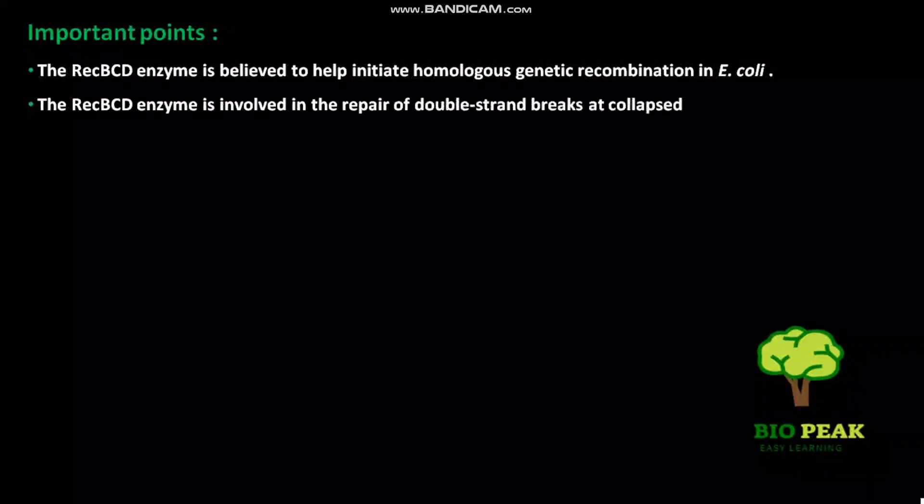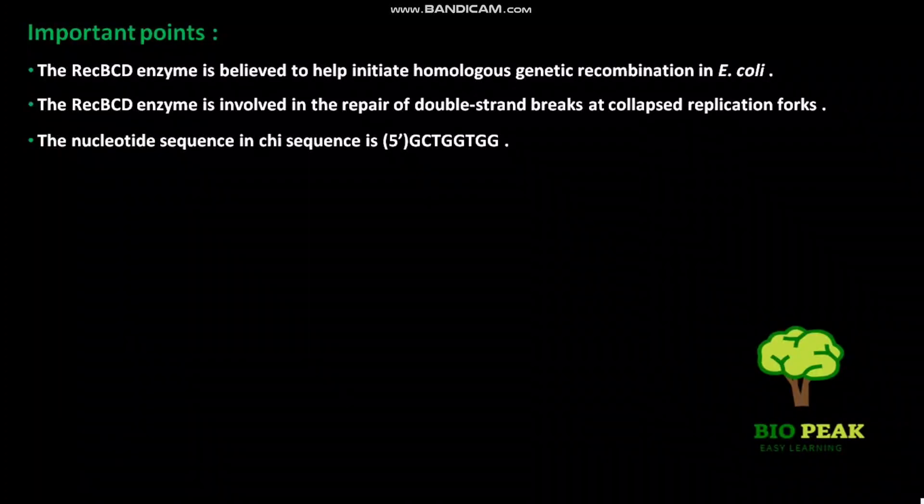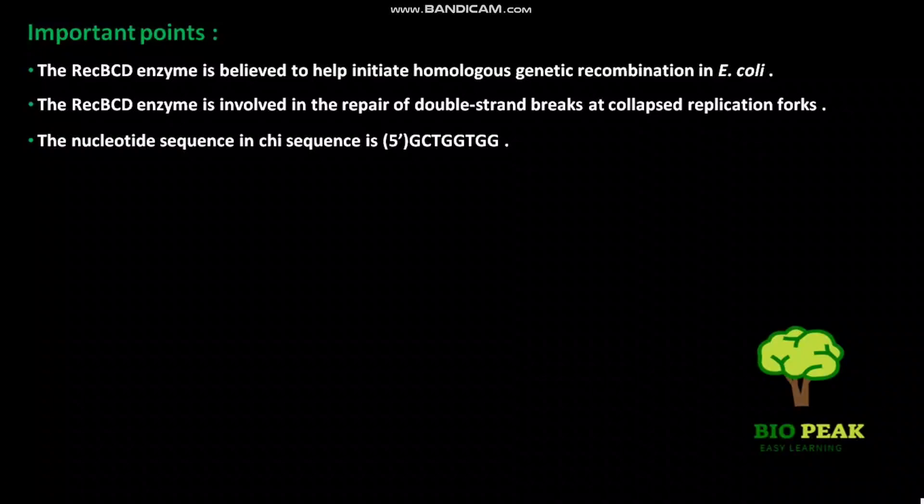Now some important points. The REC-BCD enzyme is believed to help initiate homologous genetic recombination in E. coli. The REC-BCD enzyme is involved in the repair of double strand breaks at collapsed replication forks. The nucleotide sequence in chi-sequence is 5'GCTGGTGG.